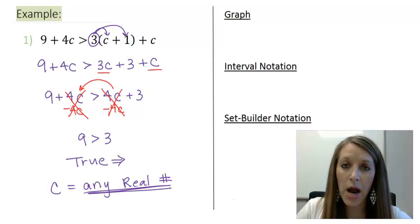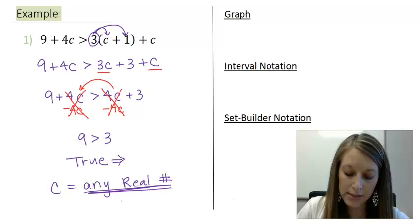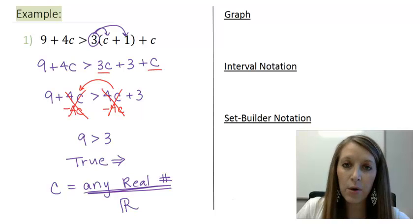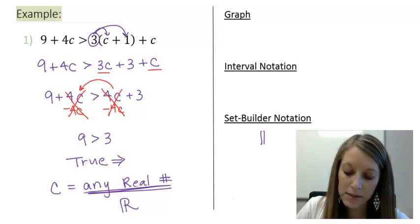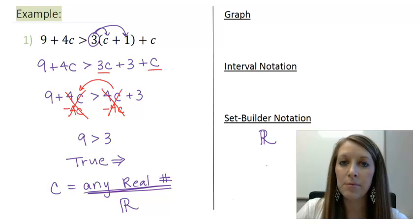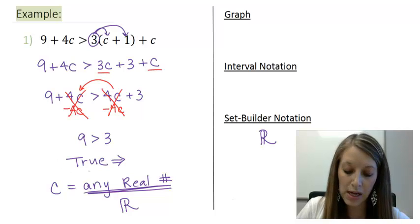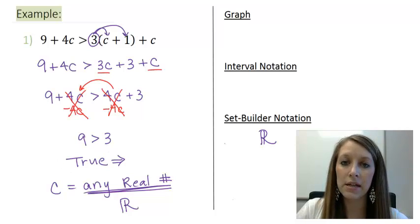Now, we know that a symbol to summarize any real number is that double bar R that we've seen probably in the first set of videos for this class. And so this double bar R is what we would input if it asks us for set builder notation. It means any real number is acceptable for a true statement with all of my c's cancel out.